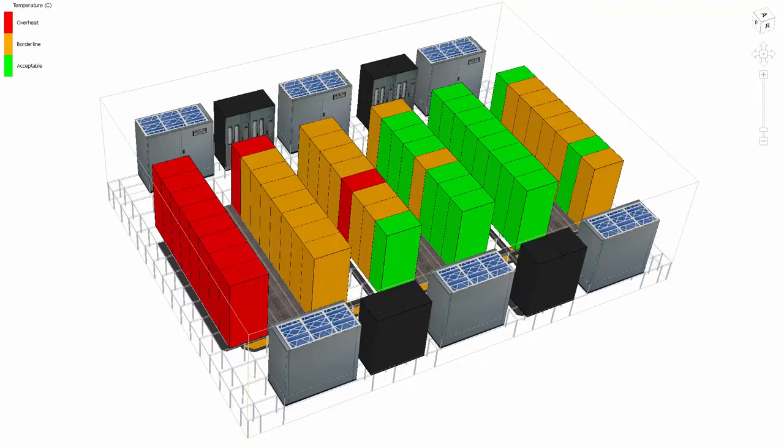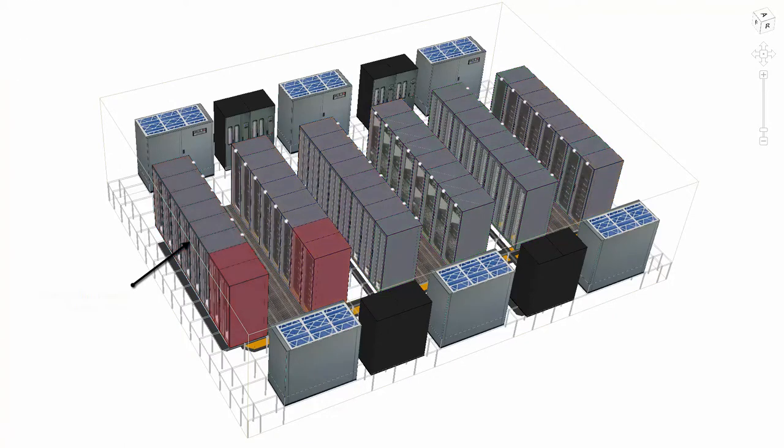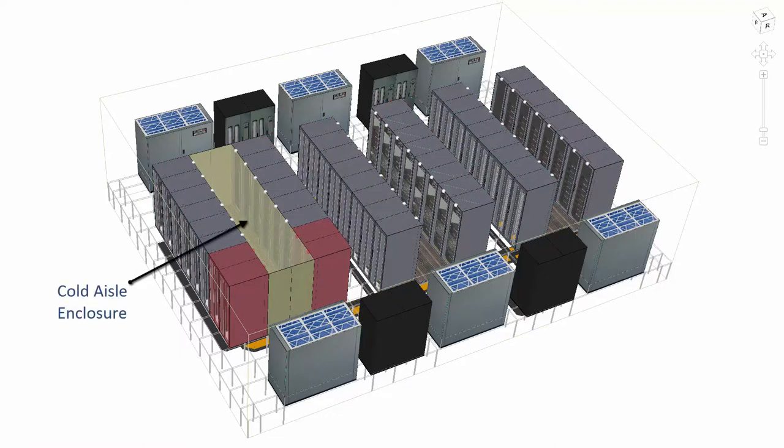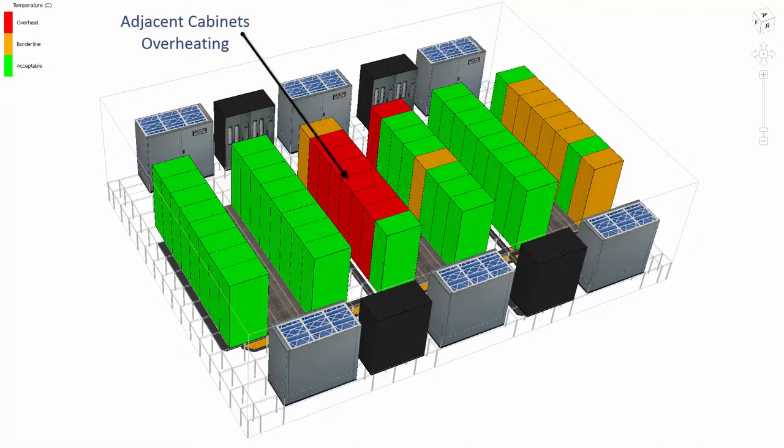In the second case, we have a hall whereby a particular row of cabinets have thermal issues. As a quick solution, the facility manager decides to implement cold aisle containment on that specific row of cabinets. Once applied, it was noticed that the thermal issues have been solved locally, but equipment in the adjacent row of cabinets were now overheating. So what has happened?